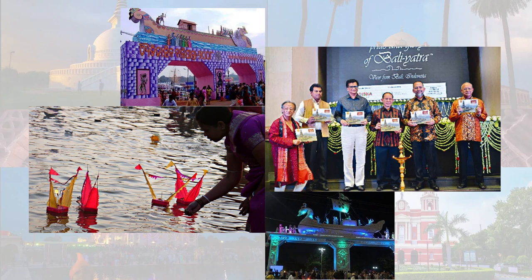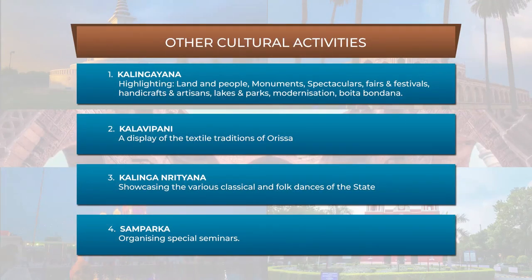It is not just enough in any promotional activity to concentrate on just one focal programme — without other assisting promotional programmes, the event is incomplete. So the Orissa government planned simultaneous cultural activities alongside the main Yatra. One of the main cultural events organised by Orissa was the Kalingayana, which highlighted the land and people of Orissa — its monuments, sculptures, fairs and festivals, handicrafts emphasising artisans and their skills, lakes and parks, and the modern version of Orissa through its Boita Bondana programme.